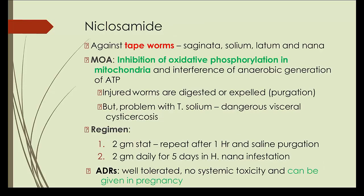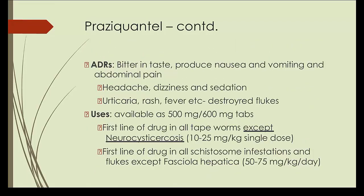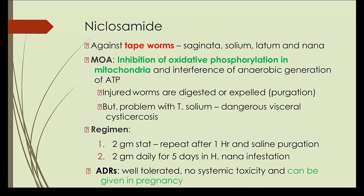Niclosamide is effective against tapeworm — specifically Taenia solium and Taenia saginata. Until now we were discussing mainly nemathelminths; niclosamide and praziquantel are effective against platyhelminthes. Mechanism: inhibition of oxidative phosphorylation. However, we do not use niclosamide much because praziquantel is a much better drug. Also, with Taenia solium, dangerous neurocysticercosis can occur when using niclosamide. Niclosamide can be given in pregnancy. Just remember the name.